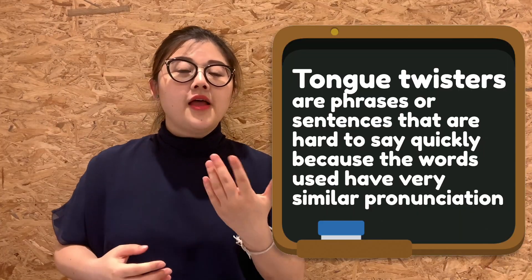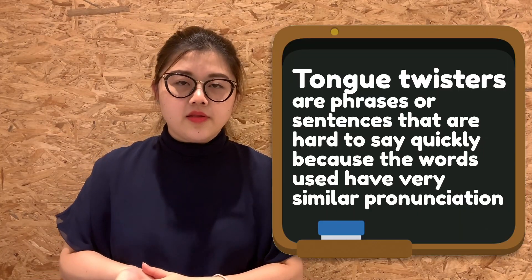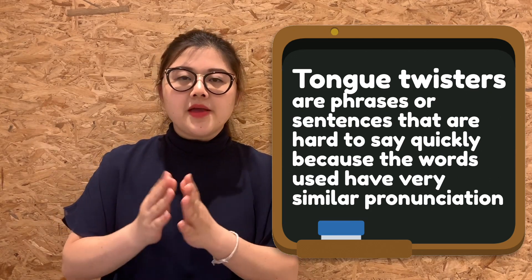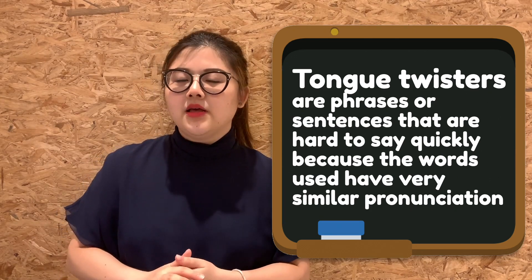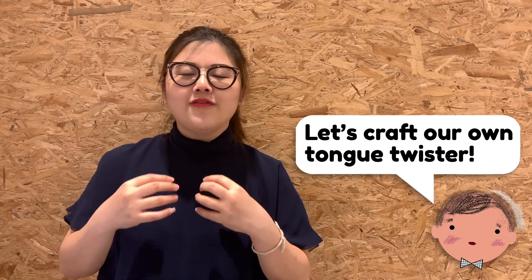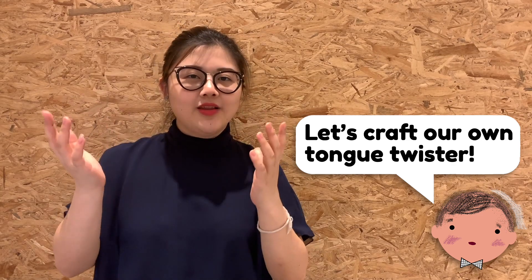The second way to use English creatively is to craft your own tongue twisters. Tongue twisters are phrases or sentences that are very hard to say quickly because they are made up of words with very similar pronunciation. Listen to me attempt this famous tongue twister: 'She sells seashells by the seashore. The seashells she sells are actually seashells.' Although tongue twisters are very hard to pronounce, they are a fun way to bring your ideas across.